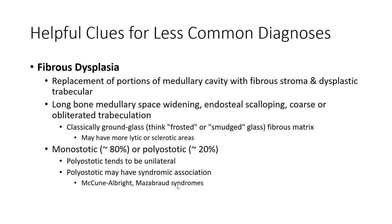Fibrous dysplasia: replacement of portions of the medullary cavity with fibrous stroma and dysplastic trabeculae in long bones, causing medullary space widening, endosteal scalloping, and coarse or obliterated trabeculation — classically a ground glass, frosted glass, or smoked glass appearance. May have more lytic or sclerotic areas. Monostotic and polyostotic forms tend to be unilateral. Polyostotic may have syndromic associations: McCune-Albright syndrome or Mazabraud syndrome.